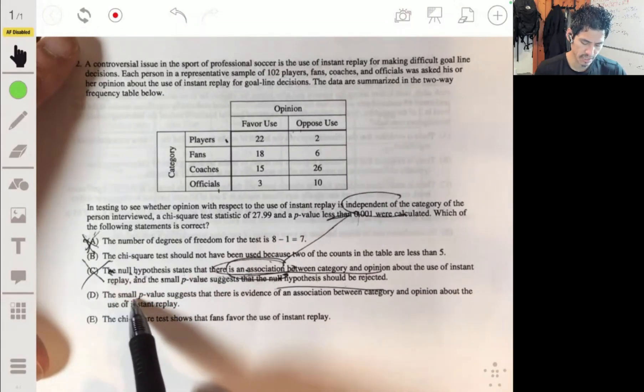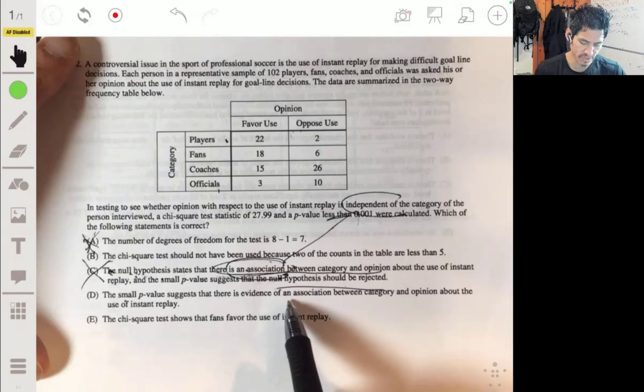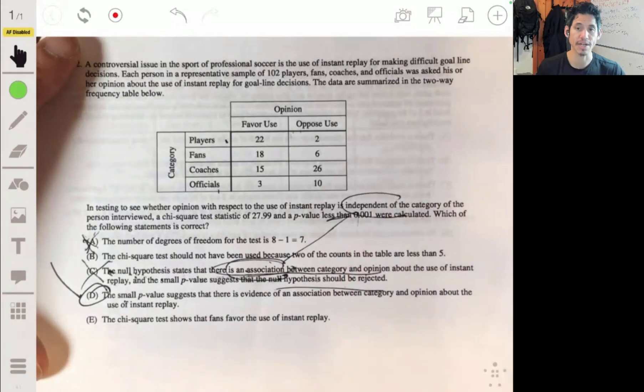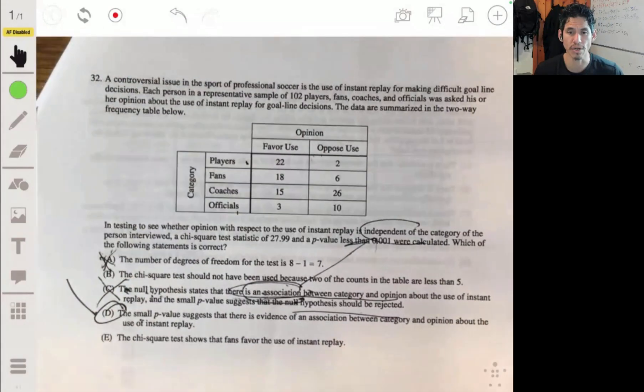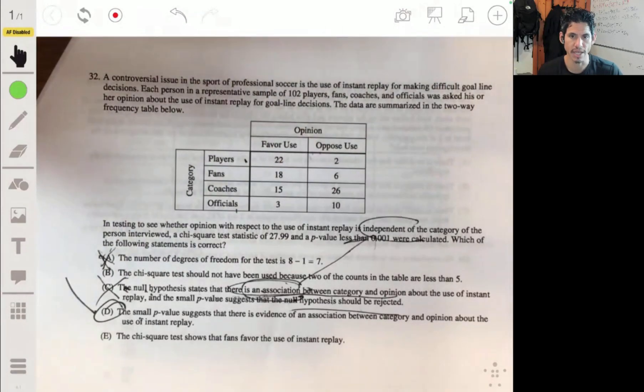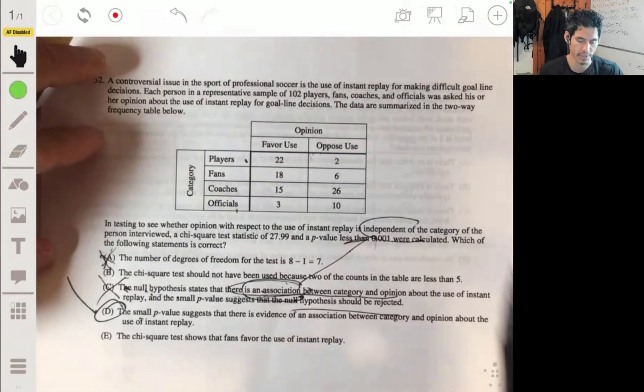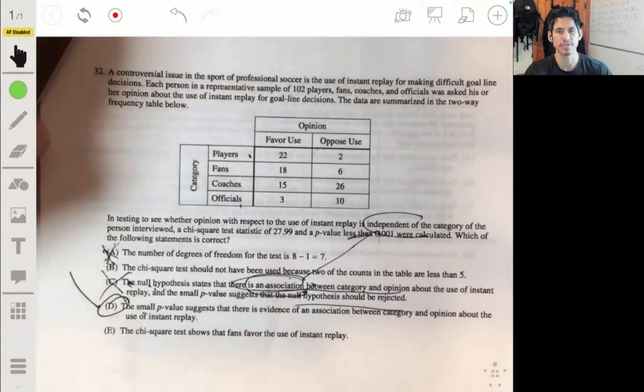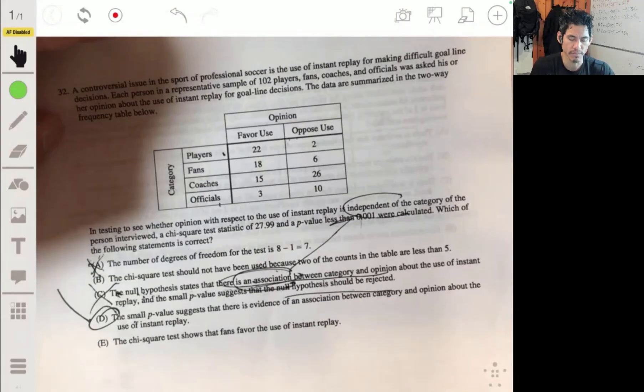So it's not going to be C. D, the small p-value suggests that there is evidence of an association between category and opinion about the instant replay. Yeah, because we got a p-value of really, really small. So yeah, that means we have statistically significant evidence to claim that there is a relationship between, you know, whether, between who you are and whether or not you favor use. Yeah, makes sense.